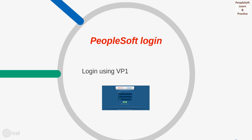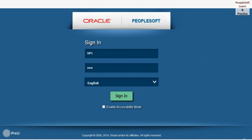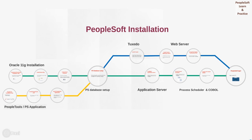If everything went well, you will be able to log into your PeopleSoft PIA and we can log in using VP1. These are the high-level steps discussed here. If you need any support in installation or need end-to-end installation done for PeopleSoft, you can contact PeopleSoft Learn and Practice — we can provide support and also train you on installation. If you want to watch and learn PeopleSoft installation, please subscribe to the channel and stay connected. Thanks.